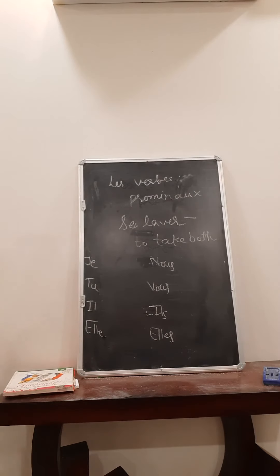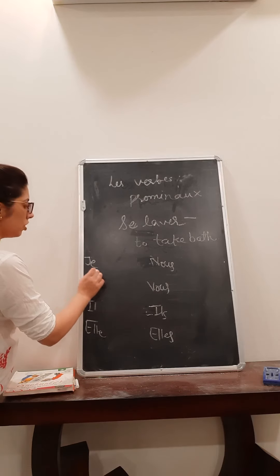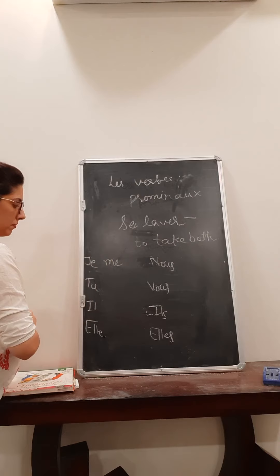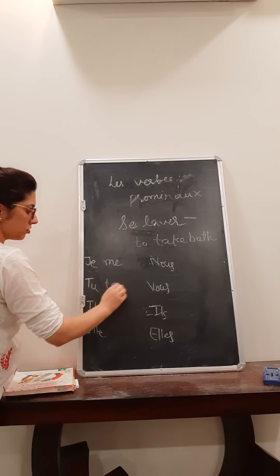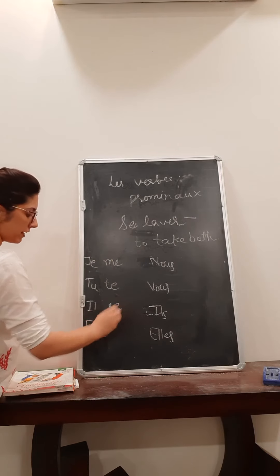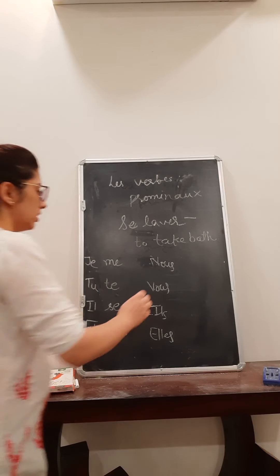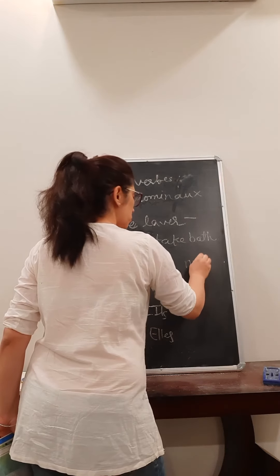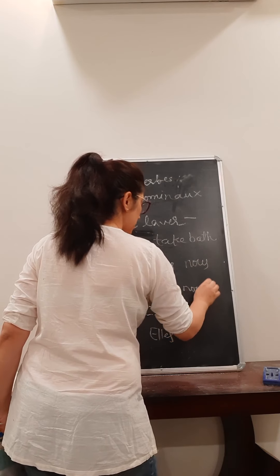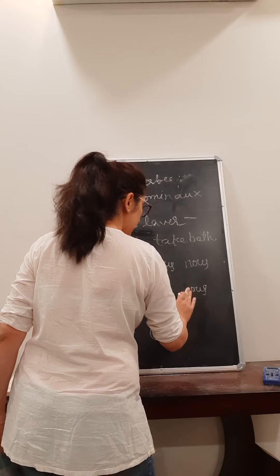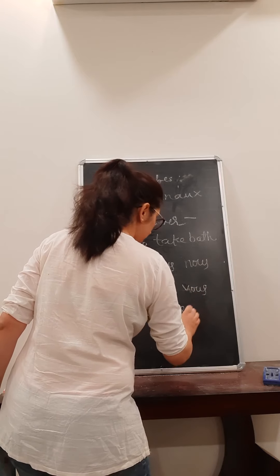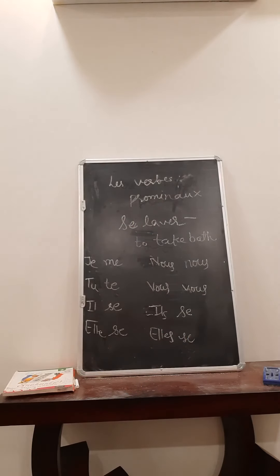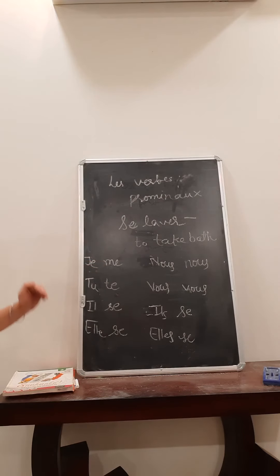We need to write all the subjects first and then see the corresponding pronouns. 'Je' always takes 'me', 'tu' always takes 'te', 'il' and 'elle' take 'se', 'nous' takes 'nous', 'vous' takes 'vous', and 'ils/elles' takes 'se'. These are the pronouns which we have to use when conjugating pronominal verbs.